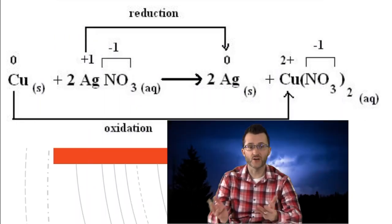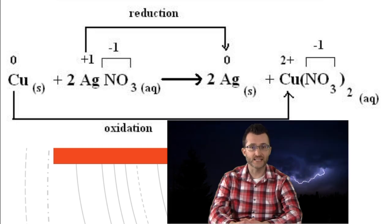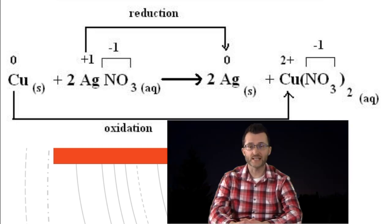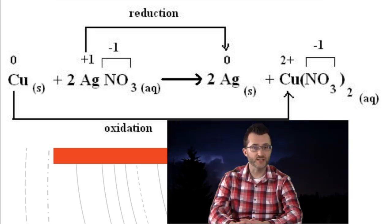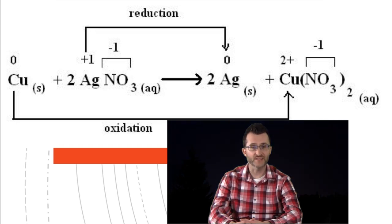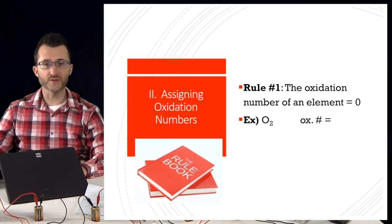Looking at this chemical equation as a reminder: oxidation and reduction always go together. Cu on the left has an oxidation state of zero, while on the right it has an oxidation state of plus two. Going from zero to plus two, it lost electrons — so this is oxidation. Ag is plus one on the left and zero on the right; going from plus one to zero, it gained electrons — that is reduction.